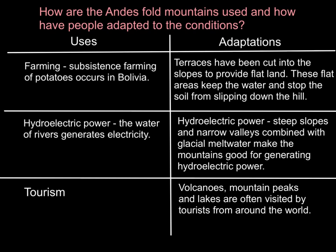The second use is hydroelectric power, where water is used to generate electricity. The adaptation is that the steep slopes and narrow valleys, combined with glacial meltwater, make the mountains ideal for generating hydroelectric power. A dam is placed on the rivers, and power is generated by water turning the turbine.